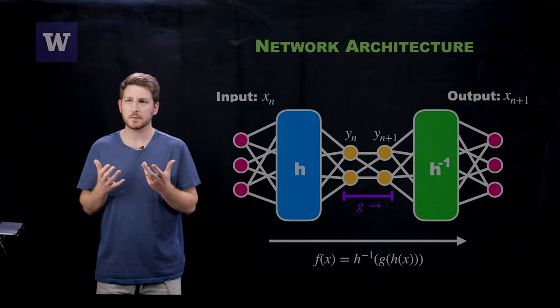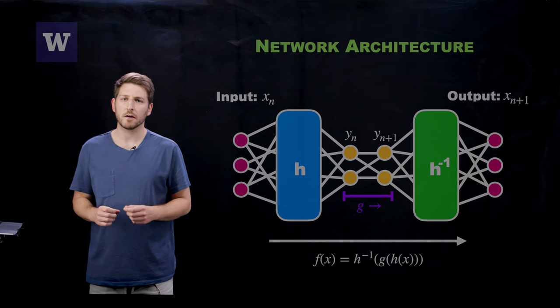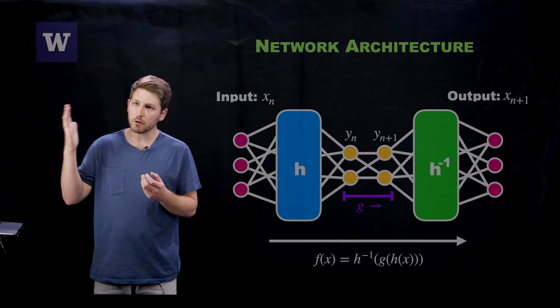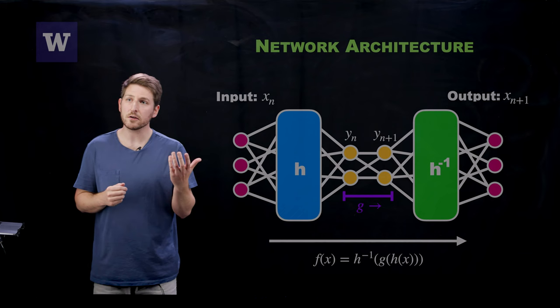And finally, the most important aspect here is that topological conjugacy preserves the topology of a chaotic attractor. So that tells us that if you want to understand what's happening in the Poincaré section, then you really just need to understand what's happening in your potentially simpler latent mapping g.